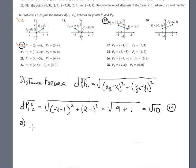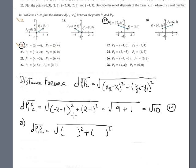Distance P1P2 is equal to square root. Inside the parenthesis, subtracting the first component: 3 minus 5 is negative 2. Subtracting the next component: minus 4, minus negative 4 gives negative 8. So we have square root of 4 plus 64, which equals square root of 68.